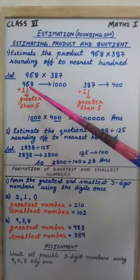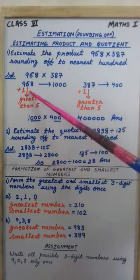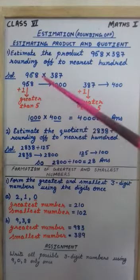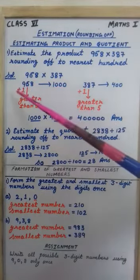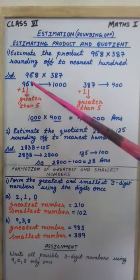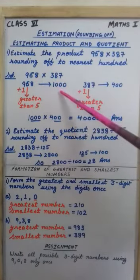Here it is 6 so it is greater than 5. Greater than 5 means last 2 digits will become 0 and we have to do plus 1 in hundreds place. So this number rounded off to 1000.